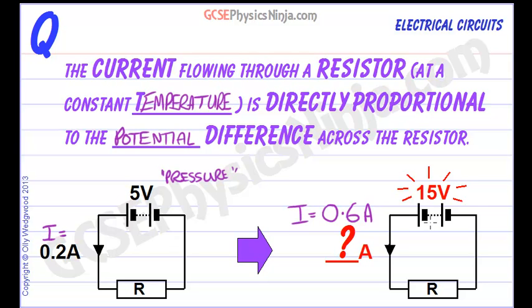That's what directly proportional means. If you double one, then you double the other. If you triple one, then you triple the other.